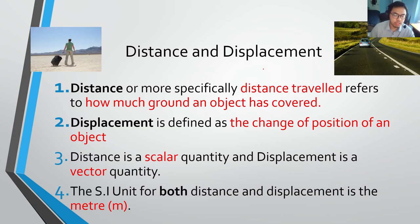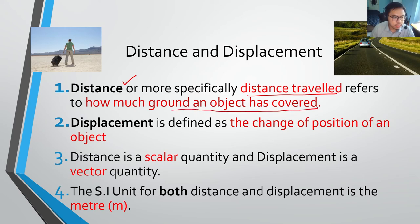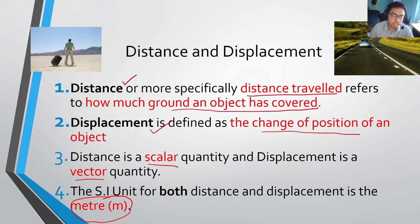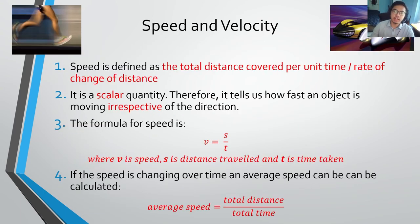To summarize, make sure you know what we mean by distance — the distance traveled, or how much ground has been covered. Make sure you know what we mean by displacement — the change of position of an object. Distance is a scalar while displacement is a vector. They are both quantities of length and both have the SI unit of meter. In the next video lesson, we're going to cover speed and velocity.